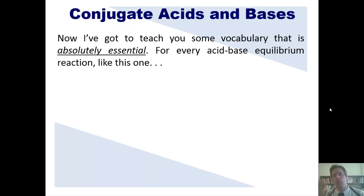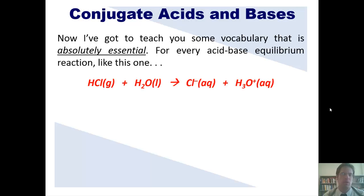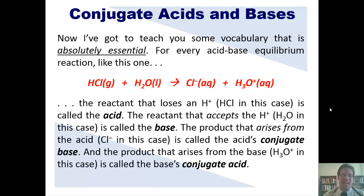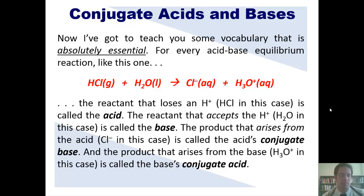I need to teach you some vocabulary that is absolutely essential. For every acid-base equilibrium reaction, the reactant that loses an H+, in this case HCl, is called the acid. The reactant that accepts the H+, which is H2O, is called the base. The product that arises from the acid — chloride in this case — is called the acid's conjugate base. The product that arises from the base, which is H3O+ (hydronium), is called the base's conjugate acid.